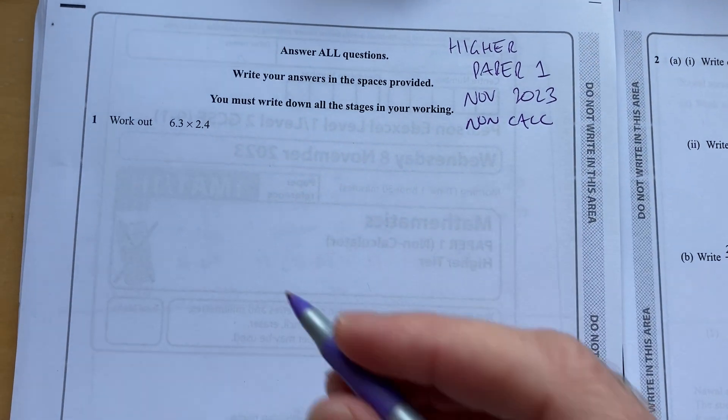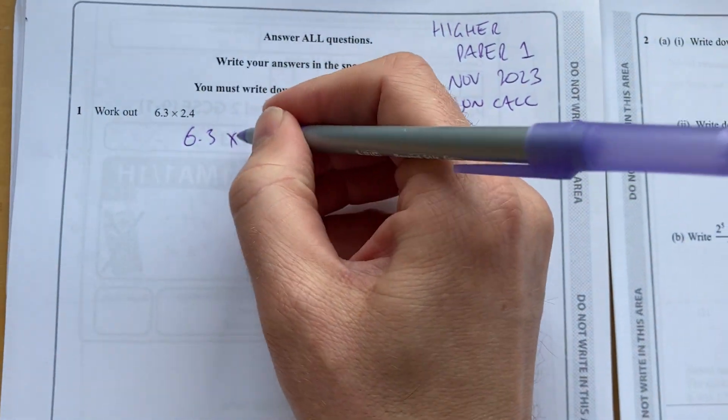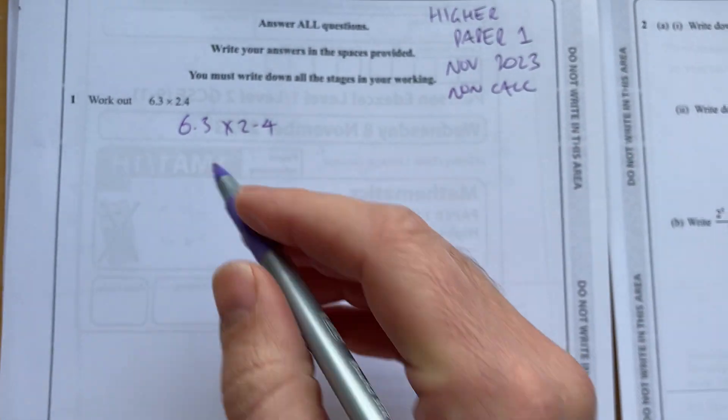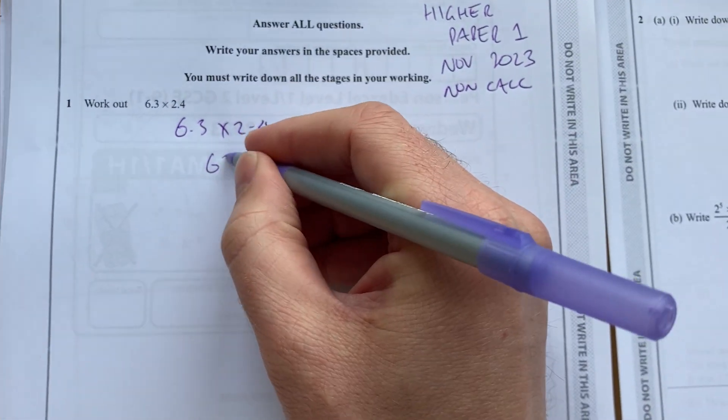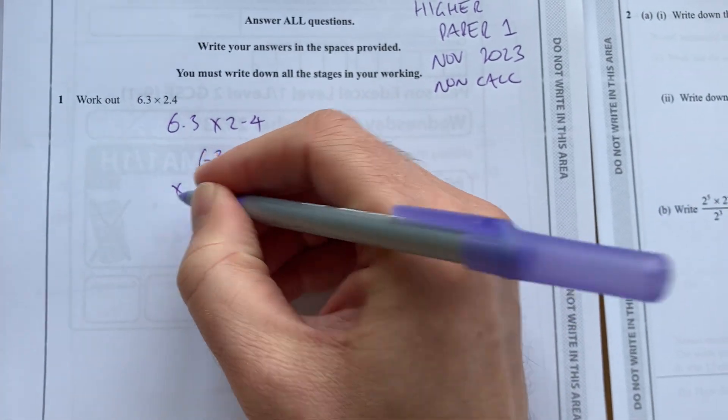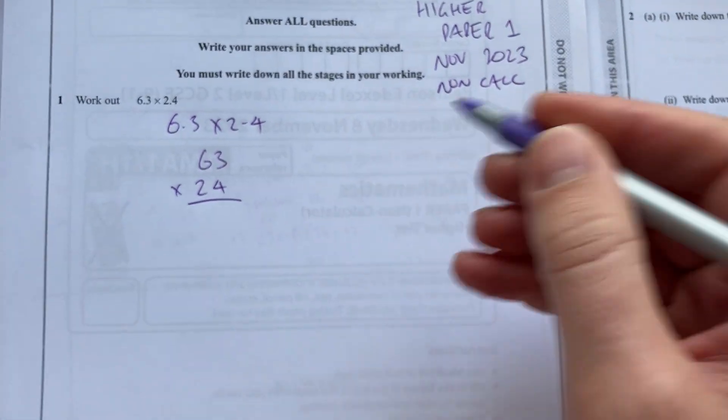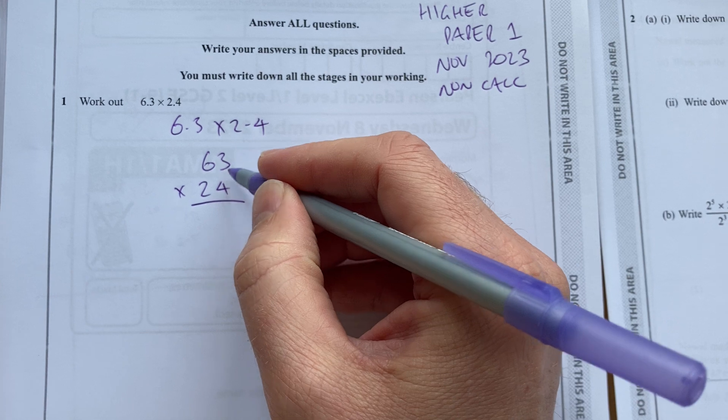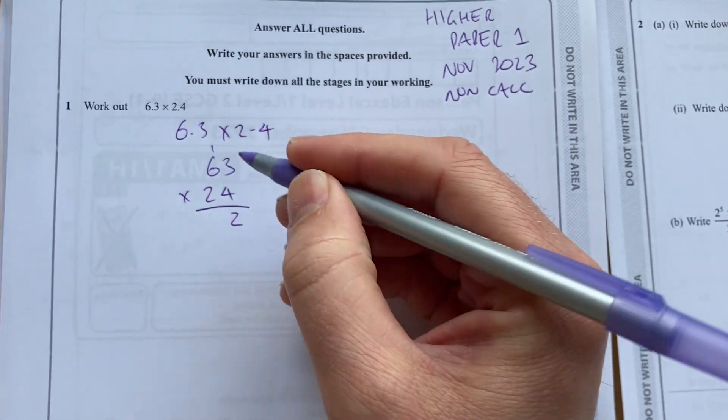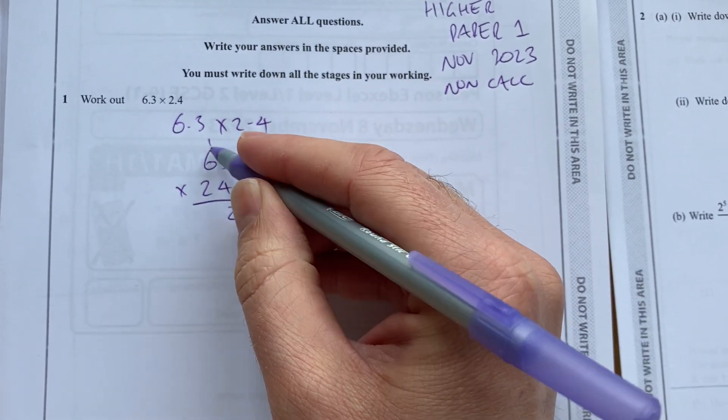Starting with question number one. It says work out 6.3 times 2.4. I'm going to multiply them both by 10 and do 63 times 24, and I'll remember to divide by 100 at the end. 4 times 3 is 12, carry that 1.